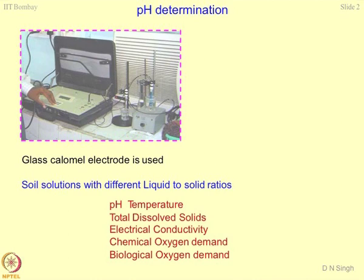Depending upon different L by S ratios, pH values may or may not change. Truly speaking, pH value should remain the same for different L by S, but if you keep increasing the liquid in the solution, pH may also alter because of more opportunity for oxides to react with water. Sometimes when working with amphoteric oxides in the materials, which have dual behavior when they come in contact with water, pH may definitely change.